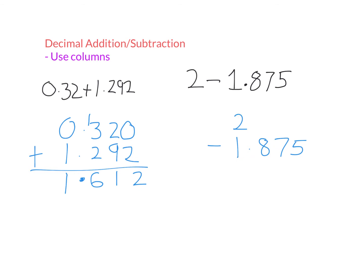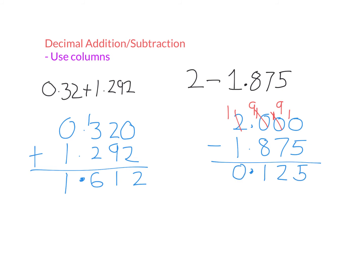Now let's do the subtraction: 2 minus 1.875. I line up the decimal points and add zeros so each number has the same number of digits. To complete this I need to do some borrowing. I can't do 0 minus 5, so I borrow — but the previous digits are also 0, so I go all the way to the 2, change it to a 1, and change that column to 10. I can't do 0 minus 7, so I change that 10 to a 9 and bring 1 over. I can't do 0 minus 5, so I change that 9 to an 8 and bring 1 over, making it 10. So: 10 minus 5 is 5; 9 minus 7 is 2; 9 minus 8 is 1; decimal point under decimal point; and 1 minus 1 is 0. Done.